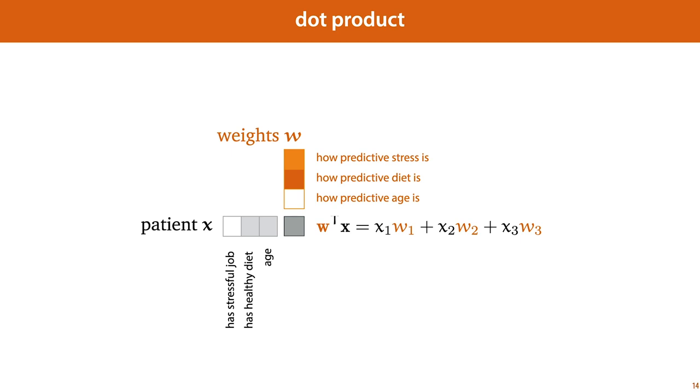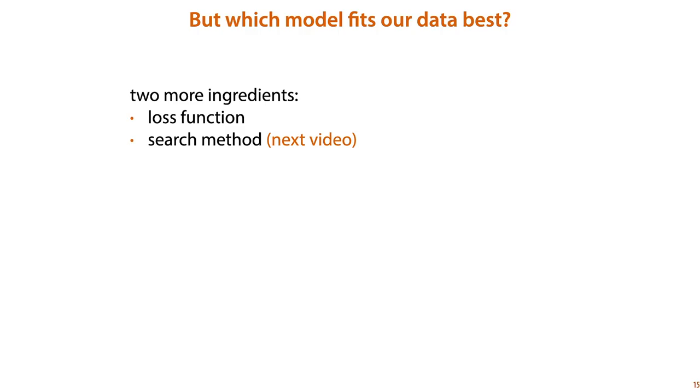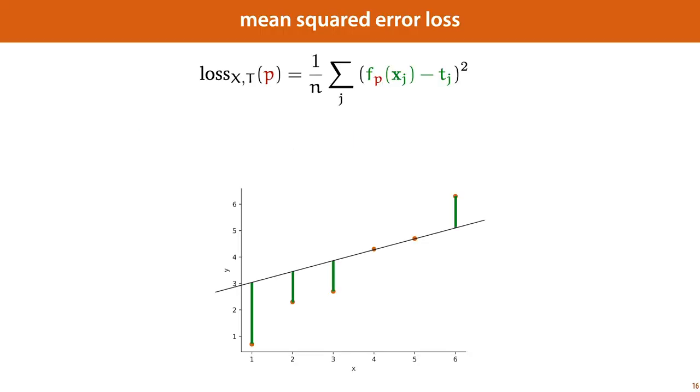So that's how we define a linear model. But given this class of models defined in this way, how do we find the one that fits our data the best? To do that, we need two more ingredients. We need to define a loss function, which tells us how well the model fits the data. And we need to define a search method, so that we can search the space of all models for the model that gives us a low loss. We'll look at the search methods in the next video, and finish up this video by looking at one of the most popular loss functions for regression. Namely, the mean squared error loss.